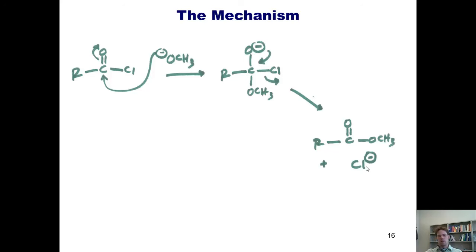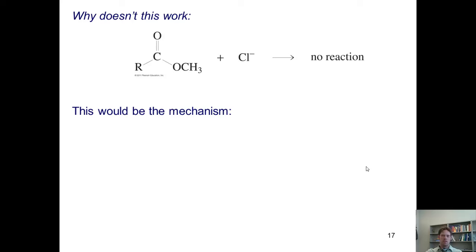So I asked you earlier, why can't you do the reverse? That is, why can't I take a chloride and displace an OCH3 with it? This would be the mechanism of that reaction. If I started with my methyl ester and had my chloride nucleophile come into the carbonyl carbon, the electrons would then go up onto that oxygen generating this tetrahedral intermediate.